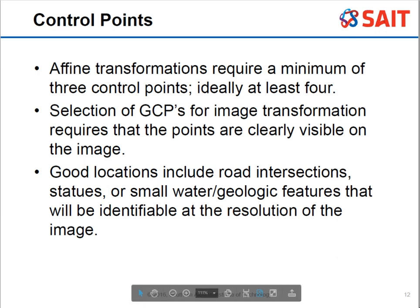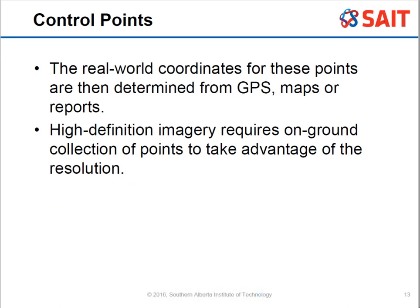Real-world coordinates can come from GPS collected in the field, pre-made maps where coordinates are already known, or reports and text files. For good imagery, you can place targets on the ground before flying over. Here in Calgary, you sometimes see large white circles with a black dot in the center — those are control points for aerial photos, and with high-definition imagery we can use those.